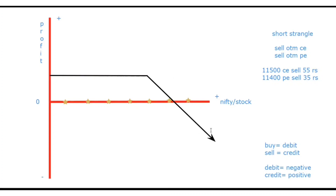And ye arrow kya ho hai? Kyunki ye arrow matlab unlimited loss — market kitna bhi ja sakta hai, 1 crore, 2 crore, 10 crore, kai bhi ja sakta hai. Ye point kya hoga? Ye hoga 11,500 — that is the strike price. So this is the payoff graph of selling a call option.